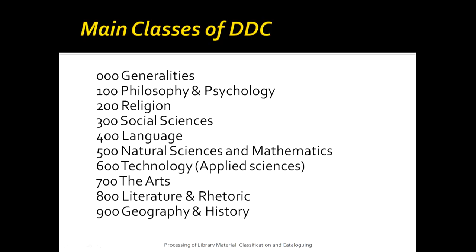Let us take a look at the main classes of Dewey Decimal Classification. DDC has basically 10 main classes: 000 Generalities, 100 Philosophy and Psychology, 200 Religion, 300 Social Sciences, 400 Language, 500 Natural Science and Mathematics, 600 Technology (Applied Sciences), 700 The Arts, 800 Literature and Rhetorics, and 900 Geography and History.